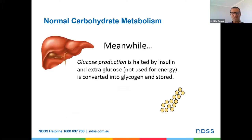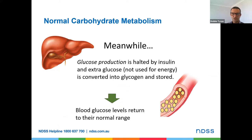Meanwhile, at the same time, the glucose production that can occur by the body is ceased by insulin. That extra glucose not used for energy is converted to glycogen — long chains of glucose stored in the liver. The blood glucose levels then return to their normal range. Glucose is either used for energy production or it heads to the liver and other places for storage as glycogen.